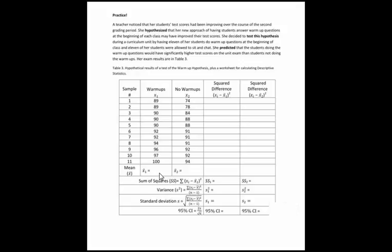The first thing that we probably need to do, because we need these numbers to calculate the rest of the numbers, is to calculate the means for both of these groups. So this is pretty easy, we're going to add up all these scores, divide by the number of samples which is 11, and when I do that for my warm-up group, I get a mean of 93.